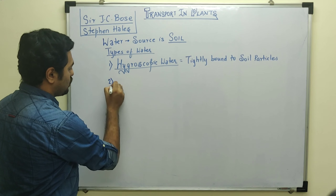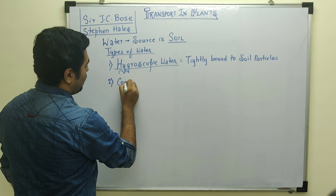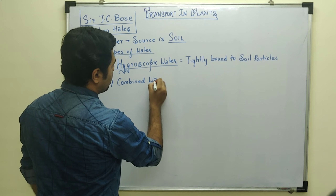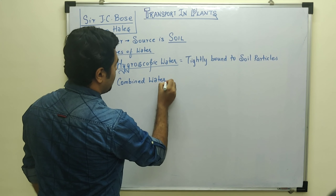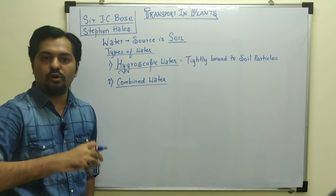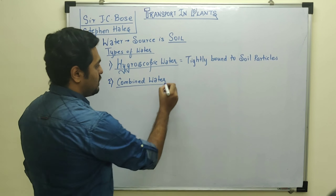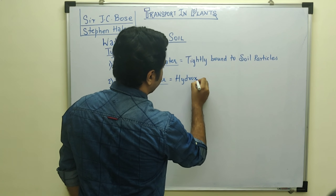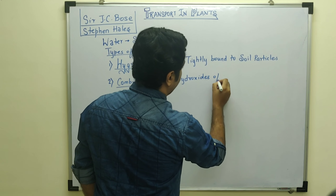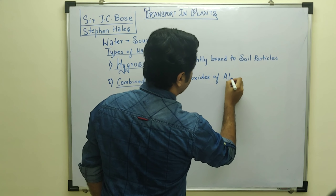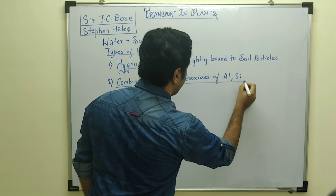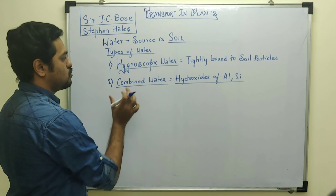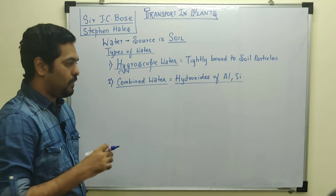The second type of water is known as combined water. Combined water means that this water is in compound form — that is, they are present as hydroxides, such as hydroxides of aluminum or silicon. In this form, the water is known as combined water.